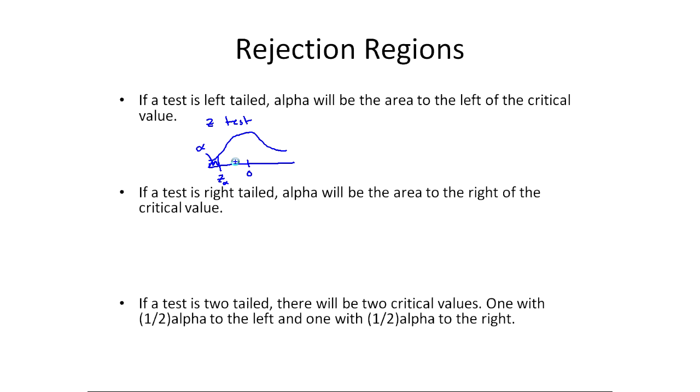We're going to have our test statistic, and if it's in this white region, we're going to fail to reject. If it's over here, we reject. And what that's doing is identical to the textbook. In the left-tailed test, if our test statistic is less than the critical value, then we reject.